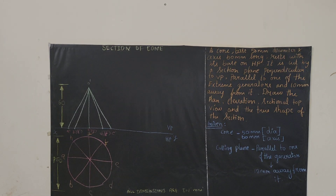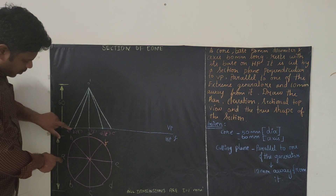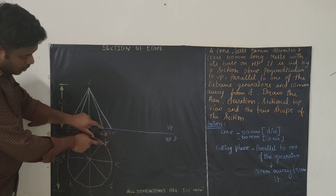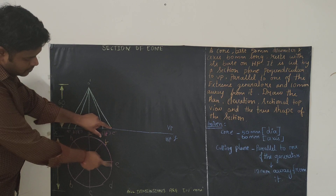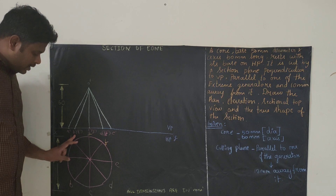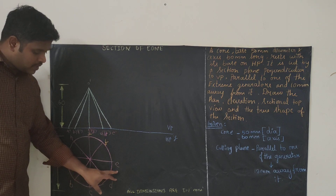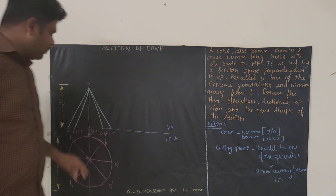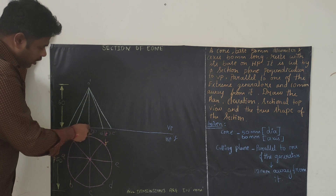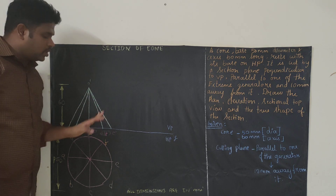The next step is we are going to draw the front view. When we project all the top view points, we can get the front view. Keep your scale vertically to get A', B'(H'), C'(G'), D'(F'), and E'. Height of the axis is 60 mm — from the reference point, draw a line 60 mm vertically, keep your point and name it O'. Then join all the points to get the front view of the cone.